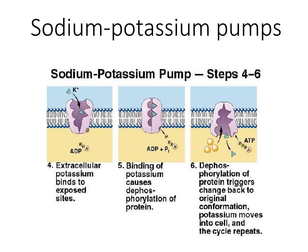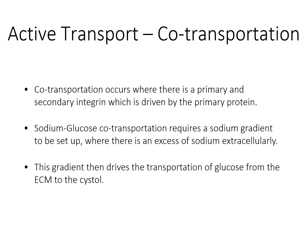Binding of potassium causes dephosphorylation of the protein, and this dephosphorylation triggers the change back to the original conformation, where potassium moves into the cell and the cycle repeats. So three sodium ions bind to the membrane protein, the shape changes once ATP phosphorylation activates it, they are released from the intracellular to the extracellular side. Extracellular potassium then binds, dephosphorylation occurs, and potassium is released to the intracellular side — always in the ratio of three sodium to two potassium.